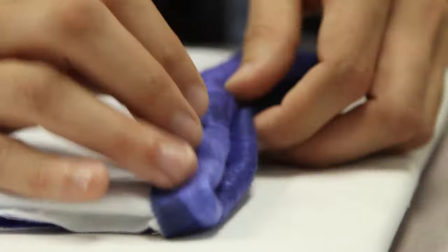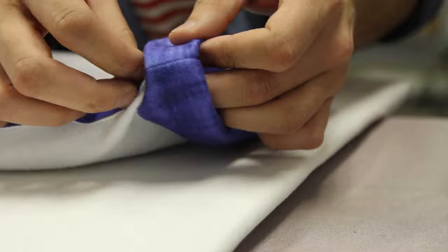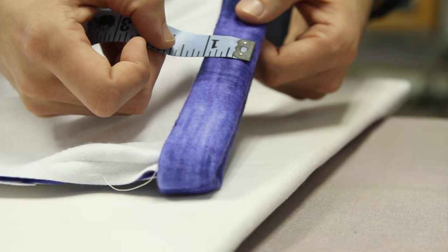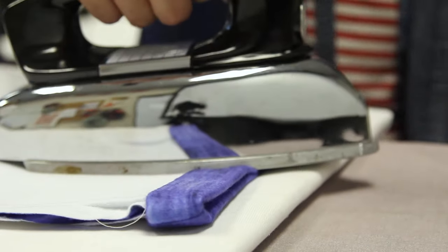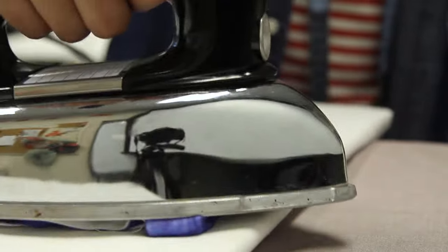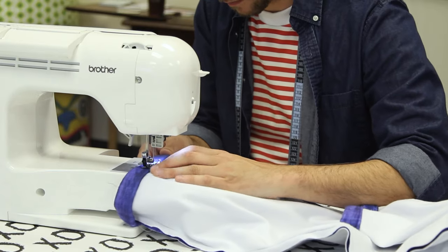To finish up, we'll need to quickly hem the pants. We'll start by folding the bottom edge of each pant leg a half an inch and then pressing. Then, fold the edge over another inch and press so that the raw edge is concealed. Then, topstitch the folded edge.